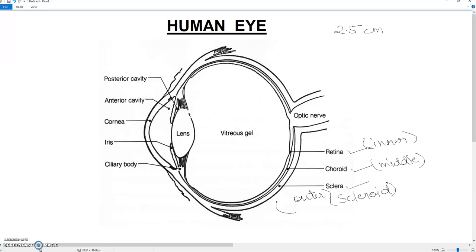Next point, if we discuss the outermost layer - the outer layer is scleroid. This layer is opaque, meaning light is not visible through this layer. So it is a fibro-elastic capsule and its color is white.